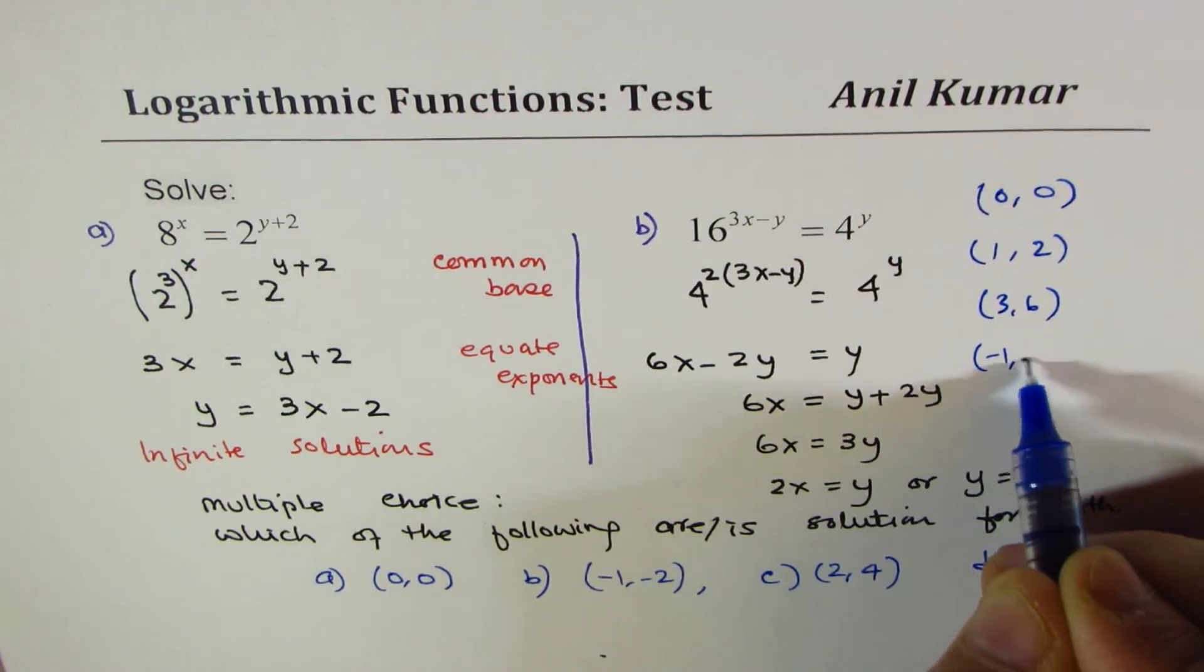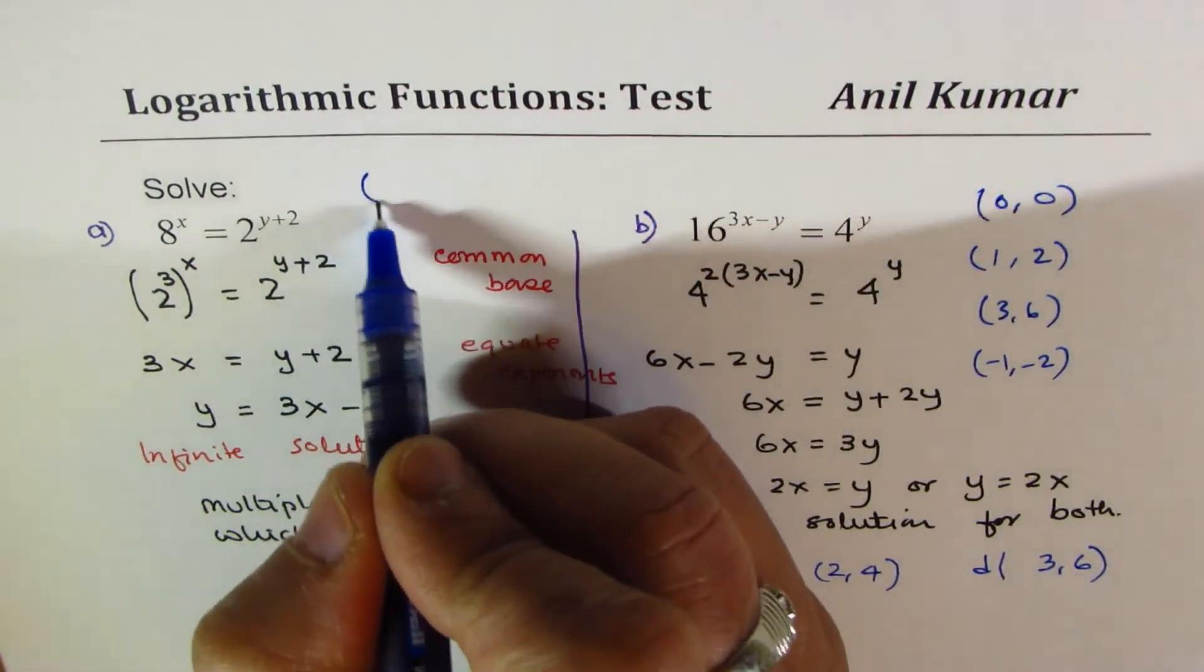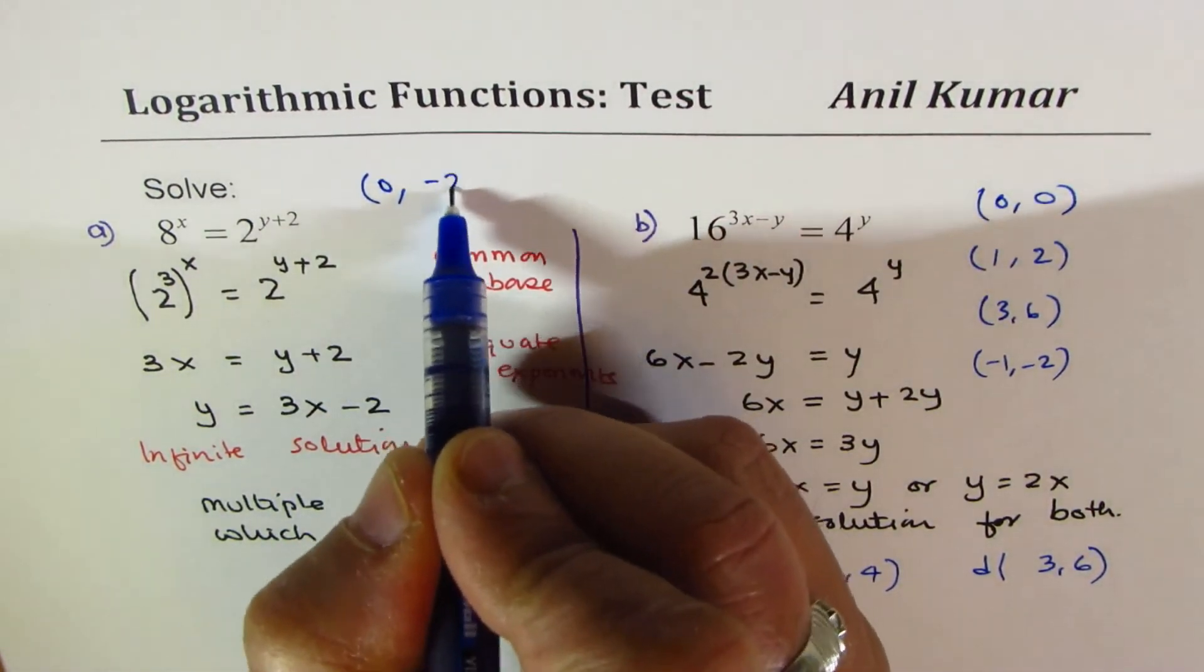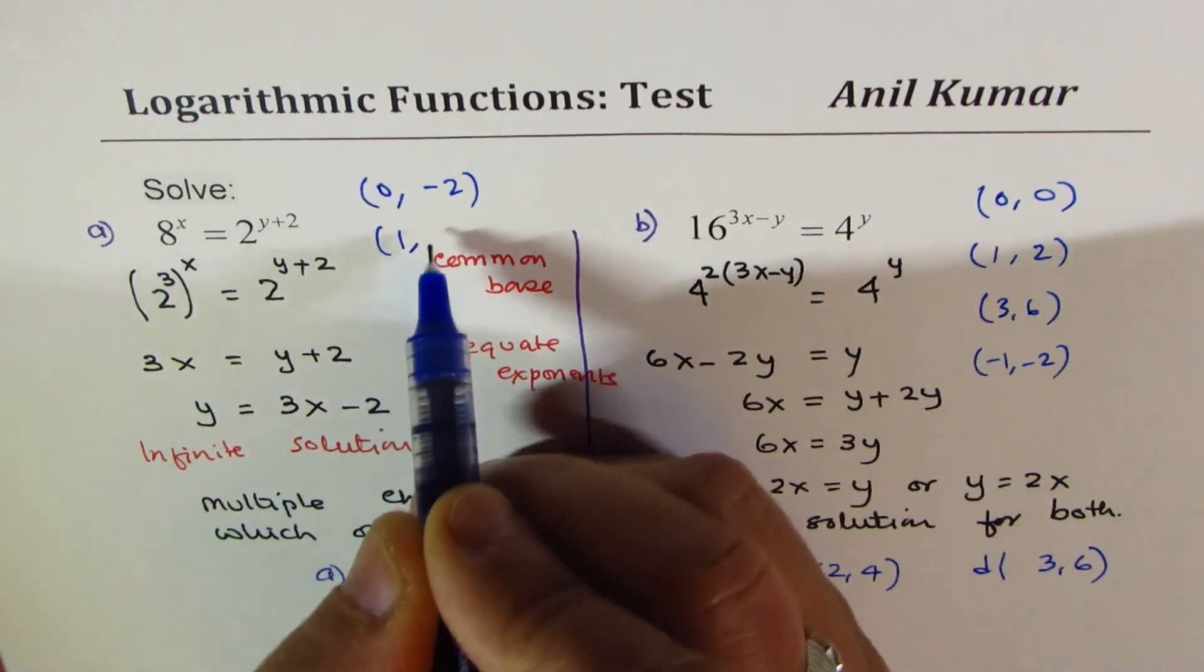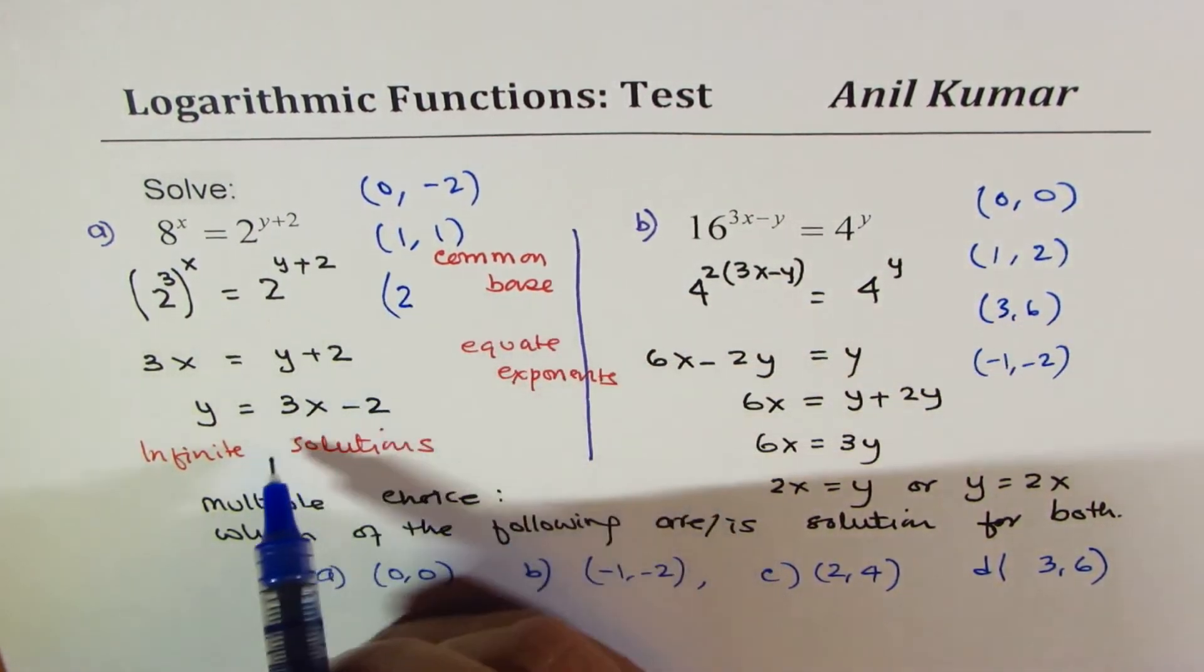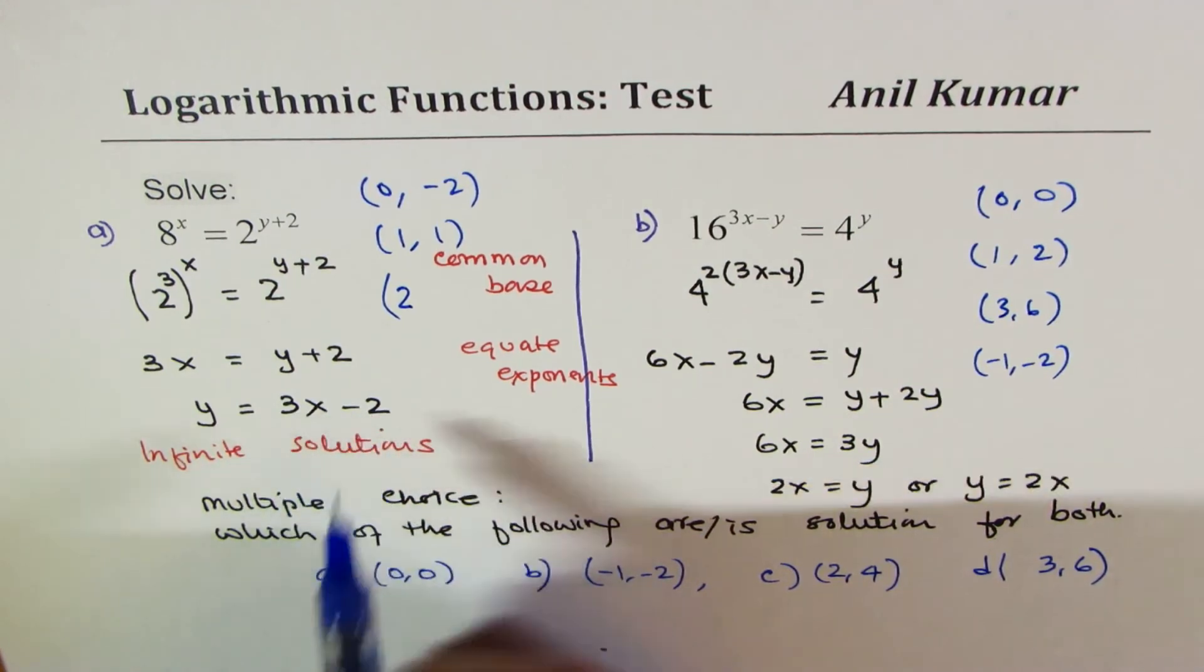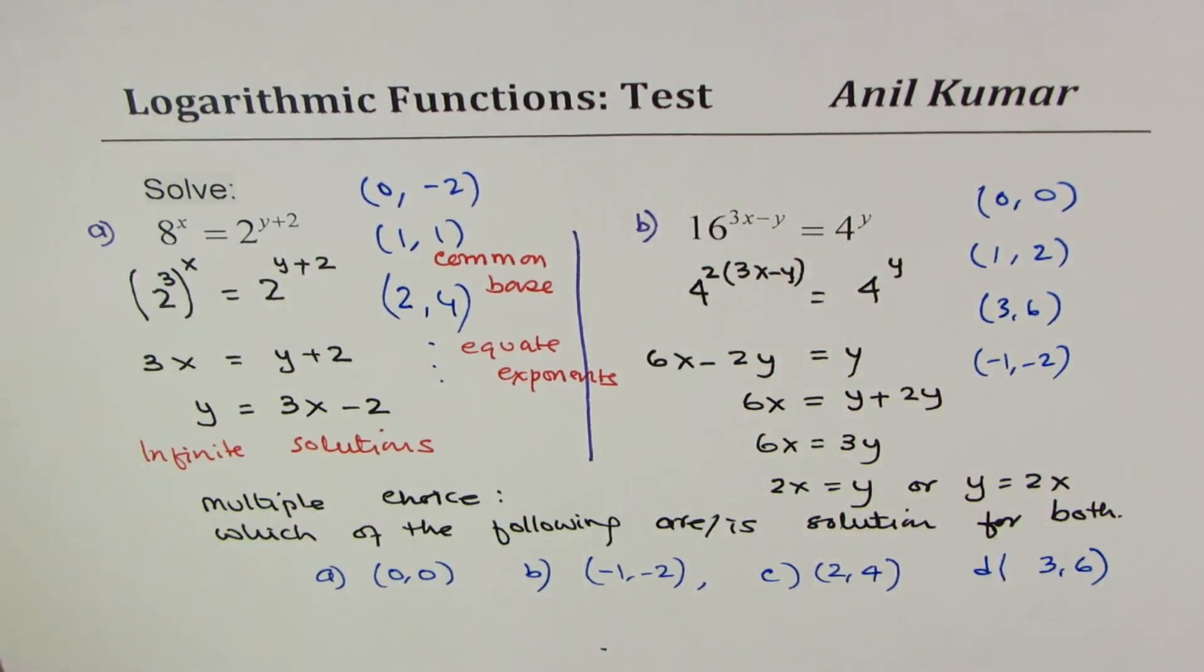In this case, the set of solutions could be: zero, zero is definitely a solution. If I write 1 for x, 2 is a solution. If I write 3, 6 is a solution. I could write -1, get -2 also. Here, if I write 0 for x, I get -2 for y. If I write 1 for x, I get 3 minus 2, which is 1. Likewise, if I write 2 here, 2 times 3 is 6, 6 minus 2 is 4. So all these could be solutions.